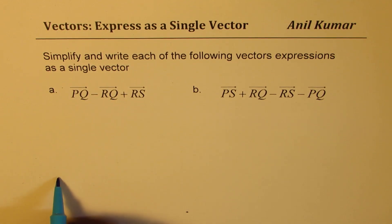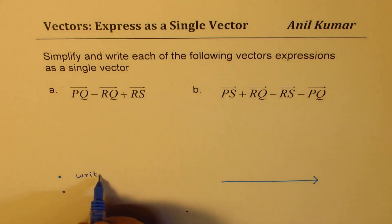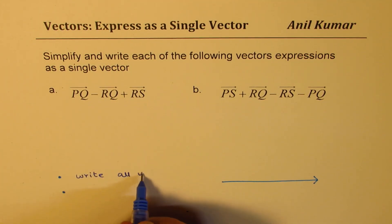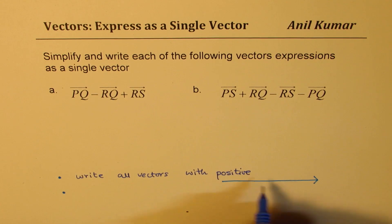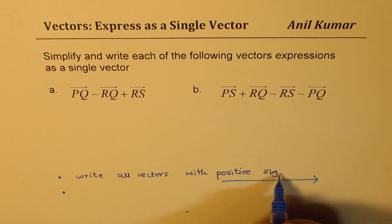Now what you need to remember here is just two things. First, always consider that you're going in one direction. So if you're going in one direction, you should write all vectors with positive sign. This is very important. Same sign, positive sign.